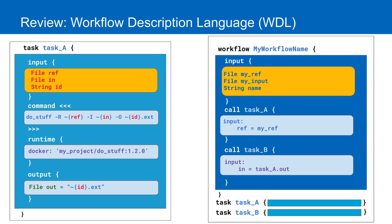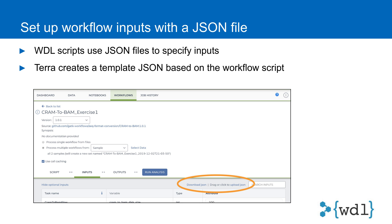Tasks can be written in the same WDL script as a workflow definition, as shown in this image, or they can be written in their own WDL file and imported. When you run a WDL workflow, you need to specify inputs like strings and file paths using a configuration file called a JSON. Fortunately, Terra can read WDL workflows and generate a JSON for you in the user interface, so we won't be making a custom JSON, but using the one that is generated in the UI.